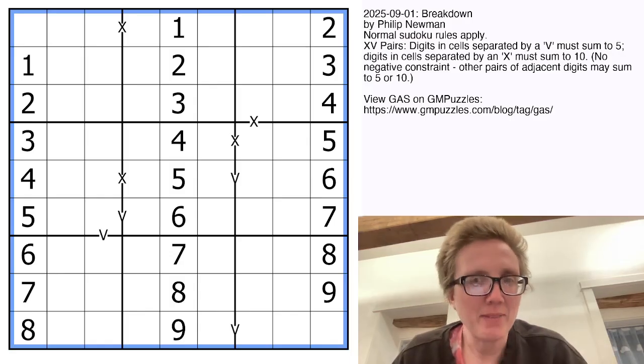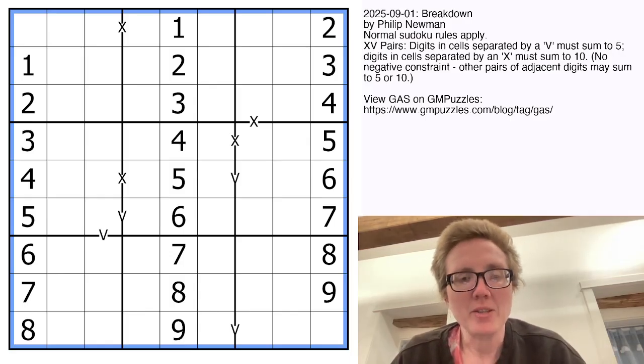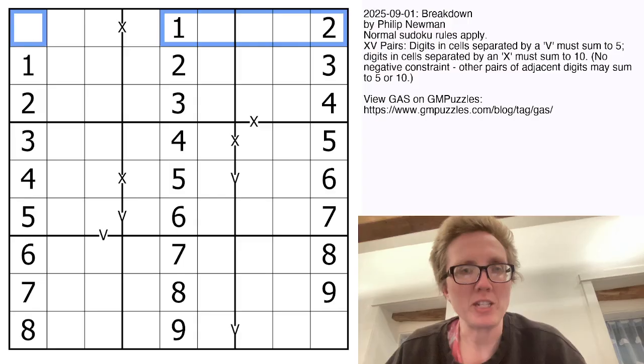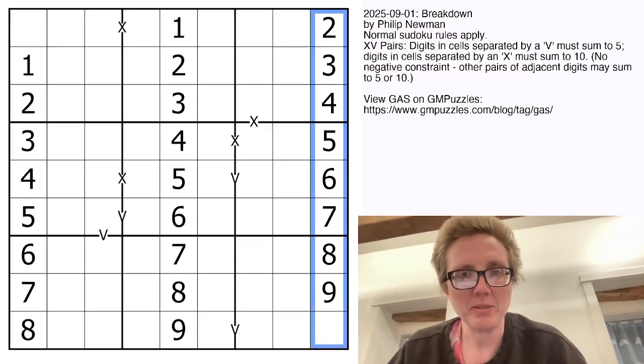This is an XV pair of Sudoku. So we have normal Sudoku rules, placing the digits 1 through 9 once each in each row, each column, and each outlined 3x3 region.